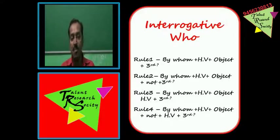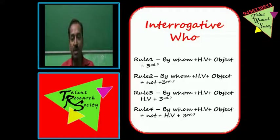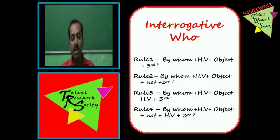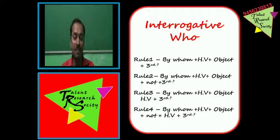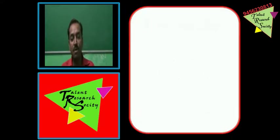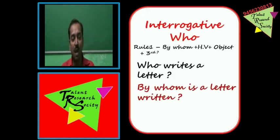Interrogative mein 'who' wale sentences mein structure thodi change hoti hai. Rule 1: By whom + helping word + object + third form. Rule 2: By whom + helping word + object + not + third form. Rule 3: By whom + helping word + object + helping word + third form. Rule 4: By whom + helping word + object + not + helping word + third form. Yahan object pehle aata hai aur third form baad mein.